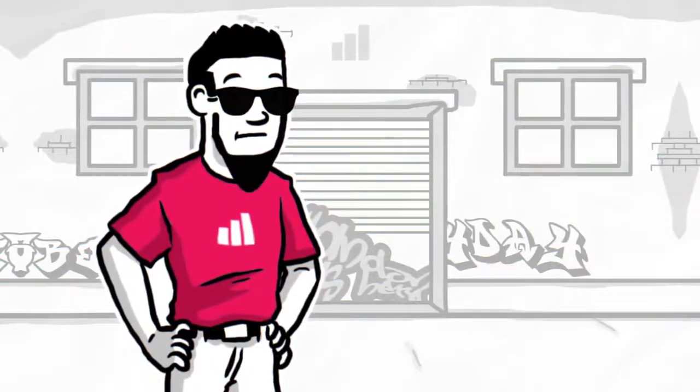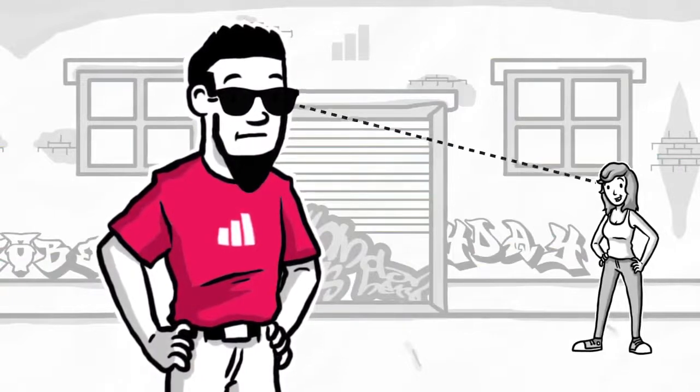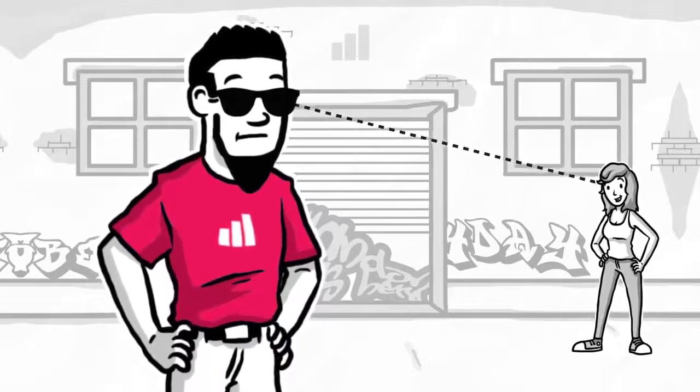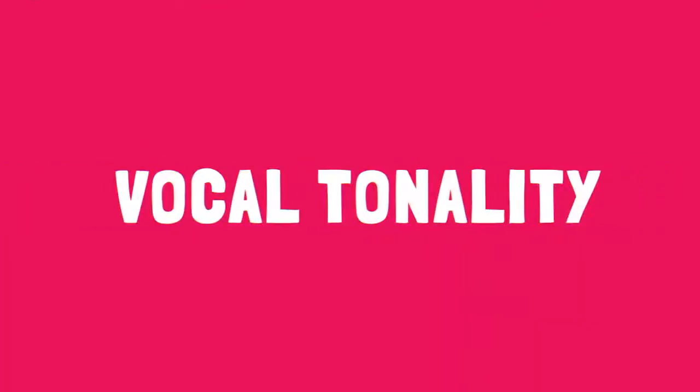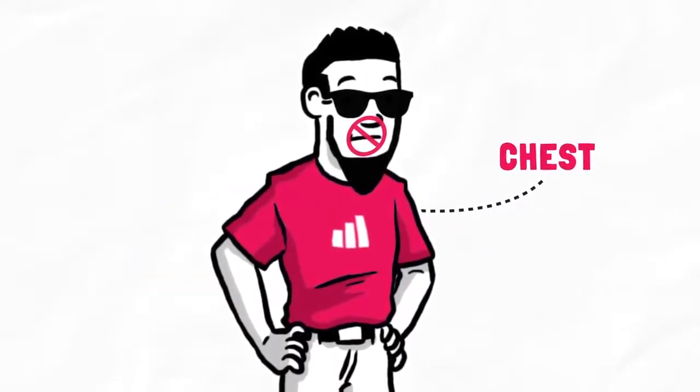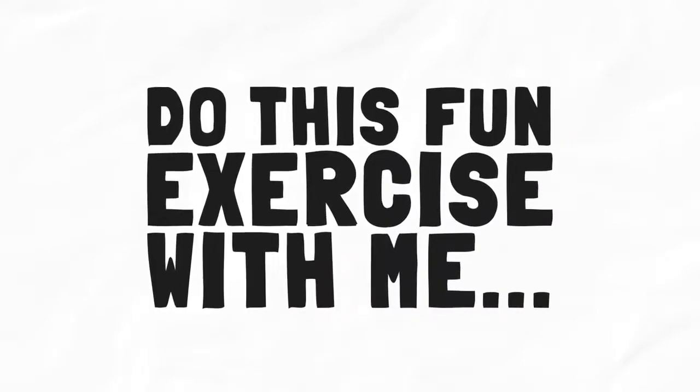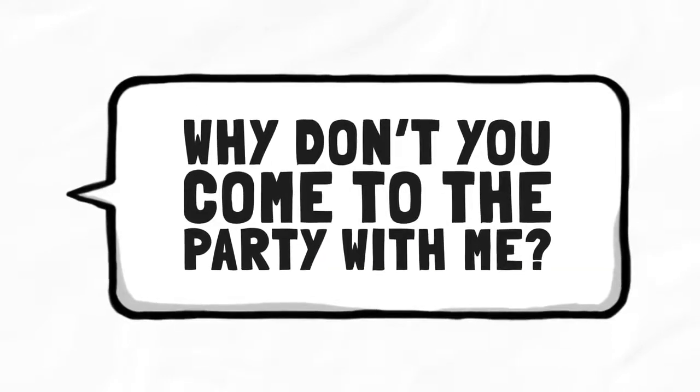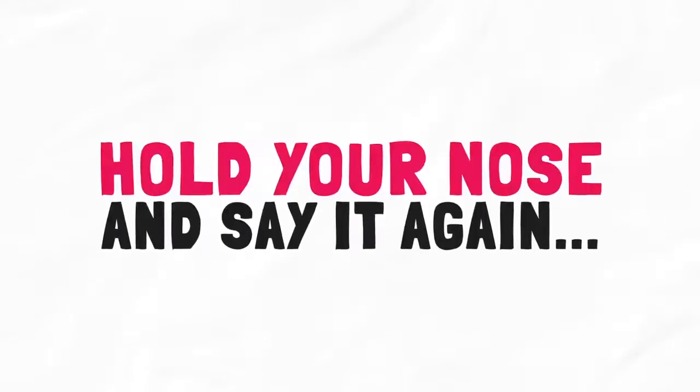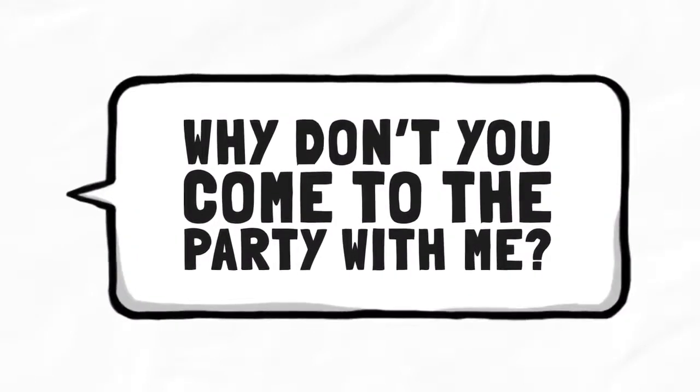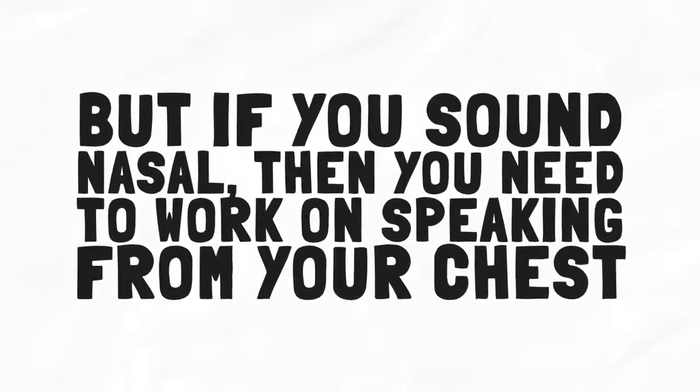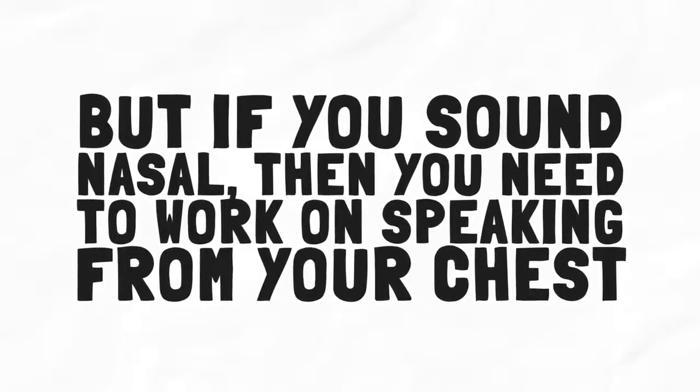Body language. Stand straight with your shoulders back. When you are out on the street, look people in the eye and maintain eye contact until they break it. It may feel weird at first, but this will train you to be more aware of people's reactions to you. Vocal tonality. Speak louder and also speak from your chest, not from your mouth. This will make your voice deeper. Do this fun exercise with me. Say, why don't you come to the party with me? Now, hold your nose and say it again. Did your voice change? If not, you probably already speak from your chest. But if you sound nasal, then you need to work on speaking from your chest.